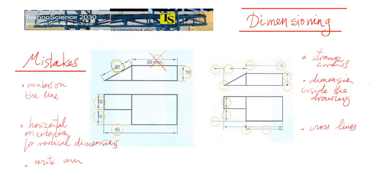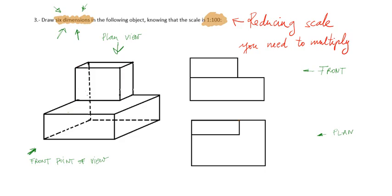So, try to avoid all these mistakes. Now, in the next video, what we are going to do is to do this exercise, that is to draw six dimensions for this object, but we are going to do it with the front and plan of the object. This is going to be in the next video.